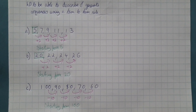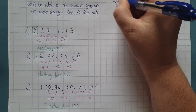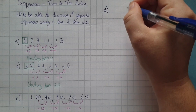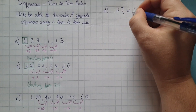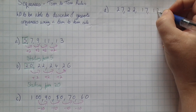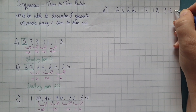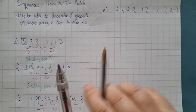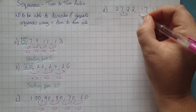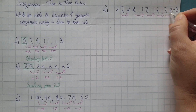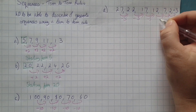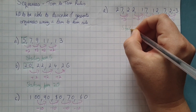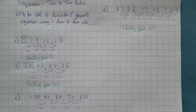Another thing worth mentioning is the fact that some sequences will go into negative numbers. So if I take the sequence 27, 22, 17, 12, 7, 2, then minus 3 — we can see that each time we go down a step, we are subtracting 5. And we are starting from 27.